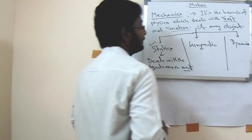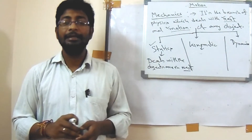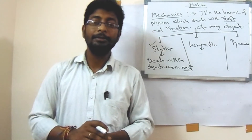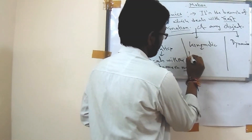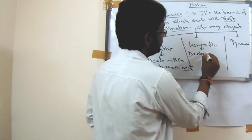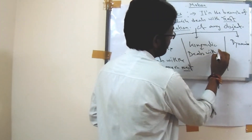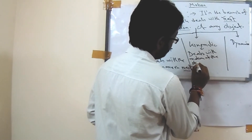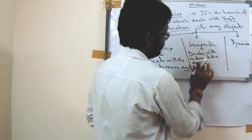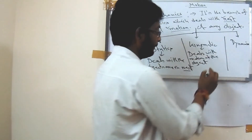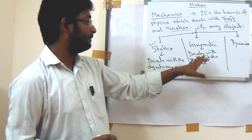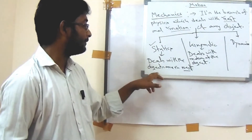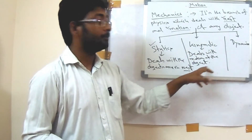Next is kinematics. Kinematics is a type of mechanics which only deals with the motion of the object. Kinematics branch only deals with the motion of the object. So statics deals with the rest of the object, and kinematics deals with the motion of the object.